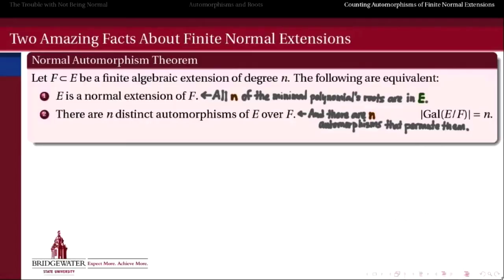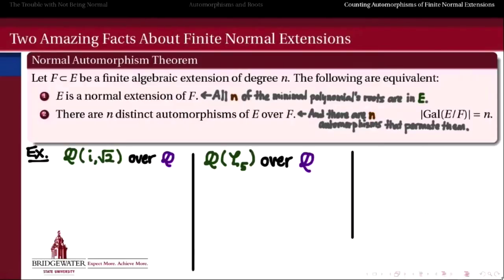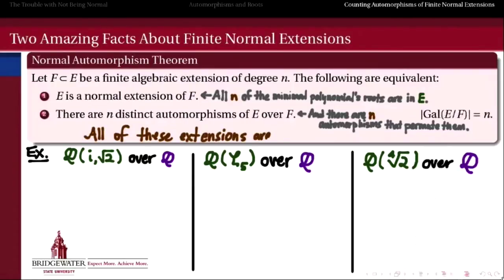We're going to illustrate this by looking at several different examples, each of which is a quartic extension of the rationals: Q adjoined with i and √2, Q adjoined with the fifth root of unity, and Q adjoined with the fourth root of 2. Each of these are degree 4 extensions of Q, but we're going to see how the count of automorphisms differs depending on whether the extension is normal or not.